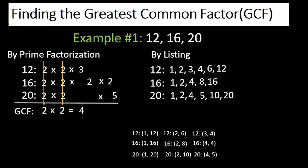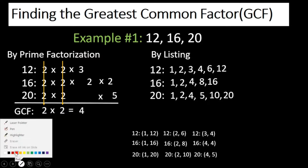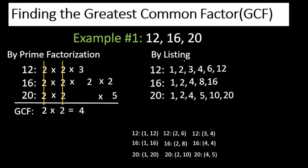Now let's look for the greatest common factor of these three numbers. There are two factors common to 12, 16, and 20. The first is 2, which is a common factor of all three. But 4 is also a common factor of all three. Since we are looking for the greatest common factor, we choose 4 because 4 is greater than 2. Therefore the greatest common factor of 12, 16, and 20 by listing method is 4. We arrive at the same answer.